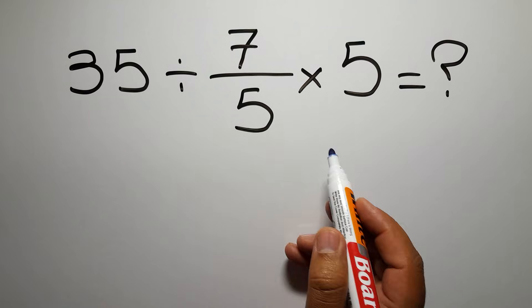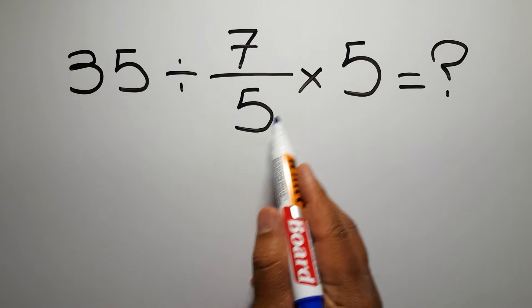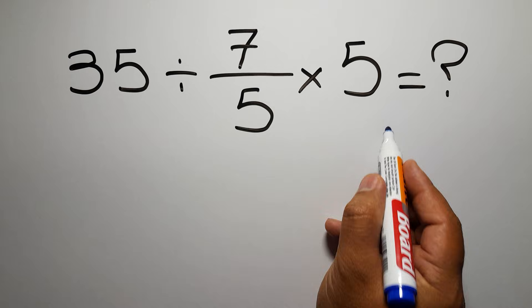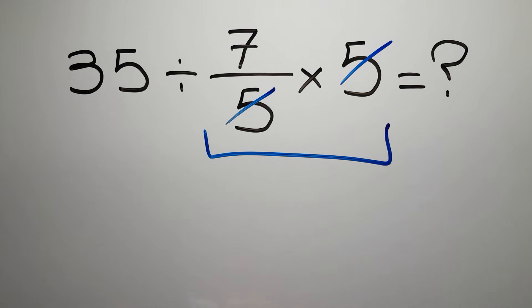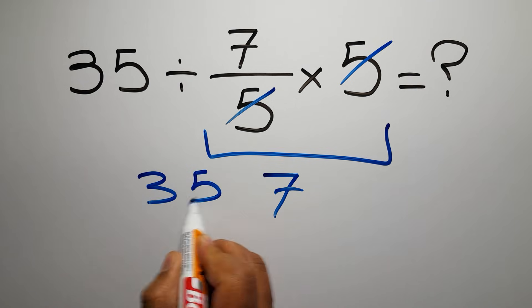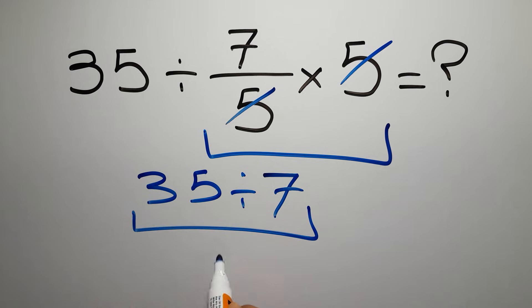First we do this multiplication, 7 over 5 times 5. We can easily cancel this 5 and this 5, so we have just 7, and 35 divided by 7 which gives us just 5. But this answer is not correct.